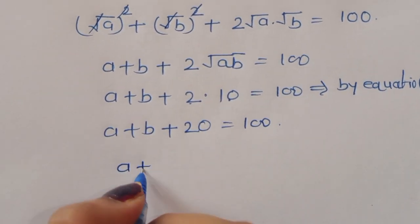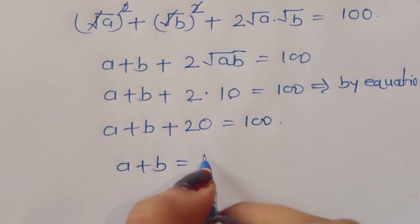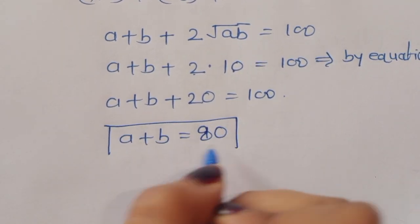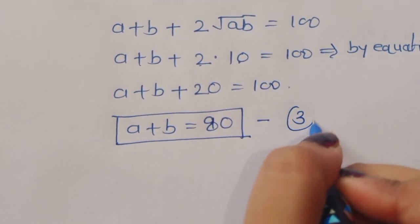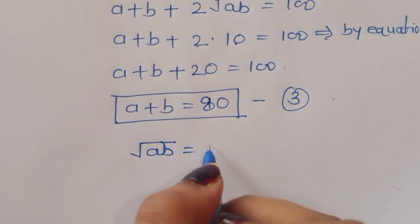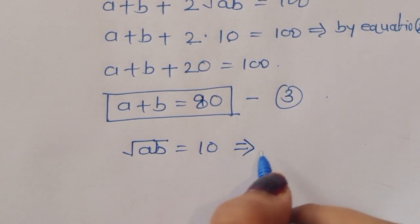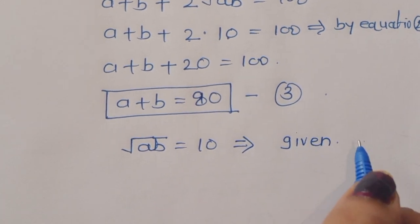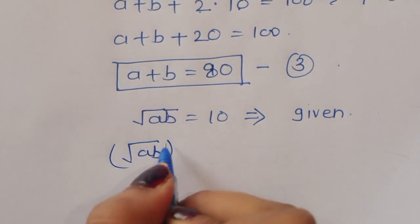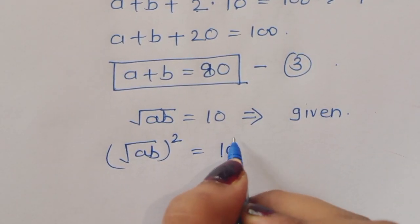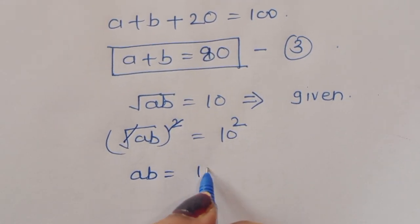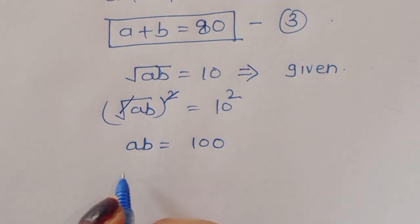So a plus b plus 2 times 10, that is 20, is equal to 100. Therefore a plus b equals 100 minus 20, which is 80. So a plus b equals 80 — this is equation number 3. Now square root of ab equals 10 is given as equation number 2, so taking square on both sides: ab equals 100.